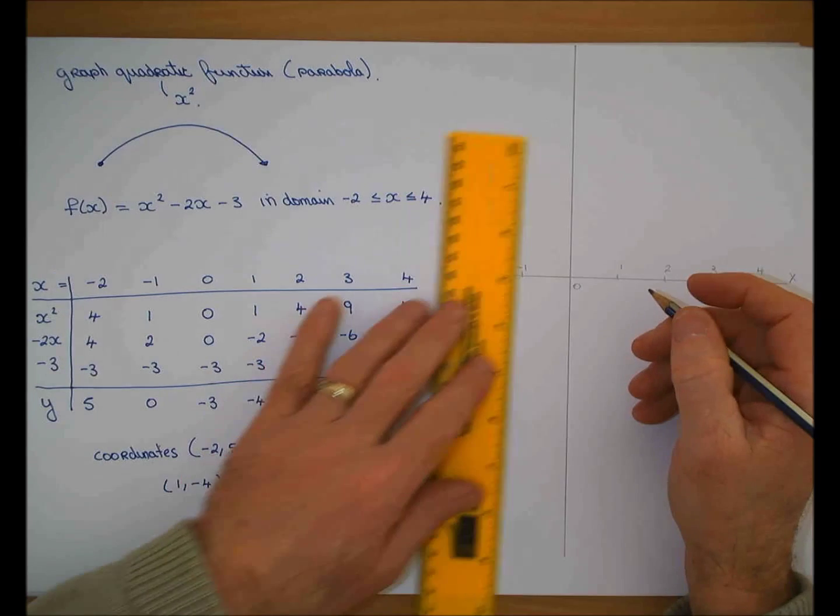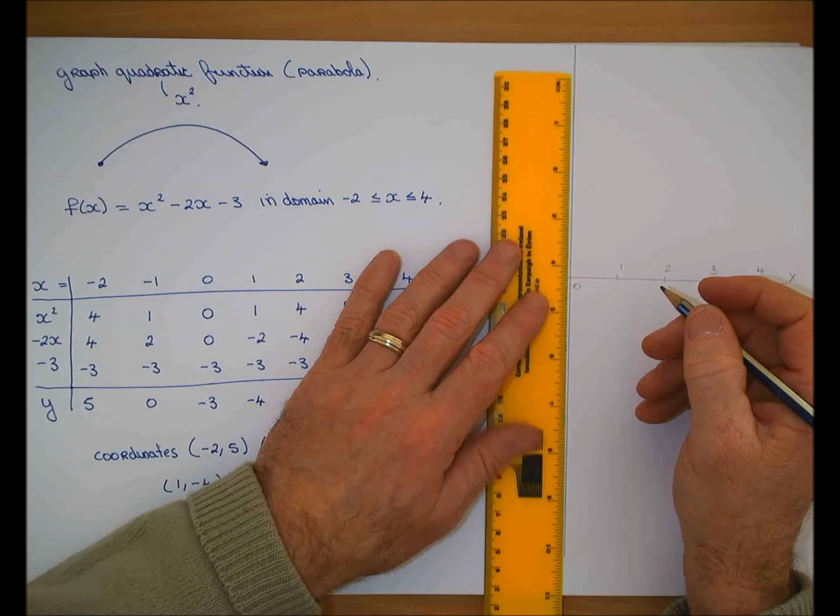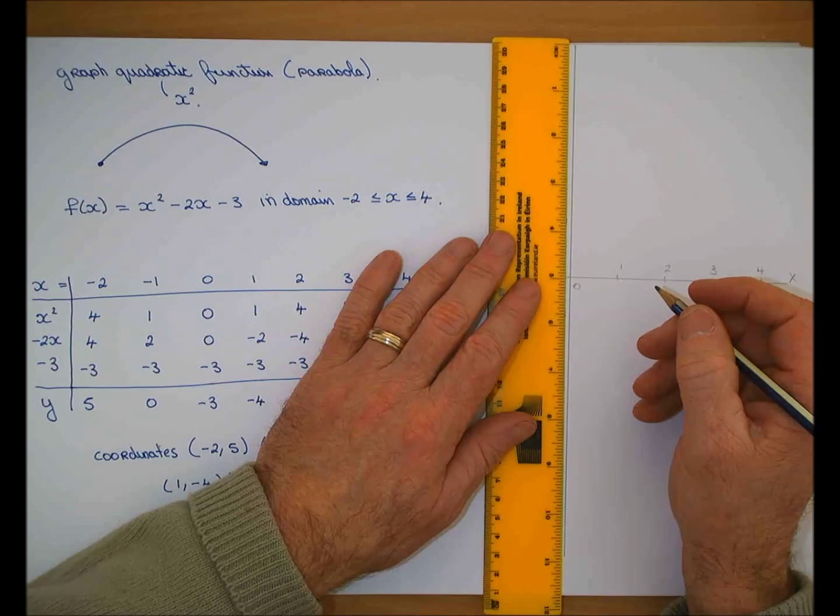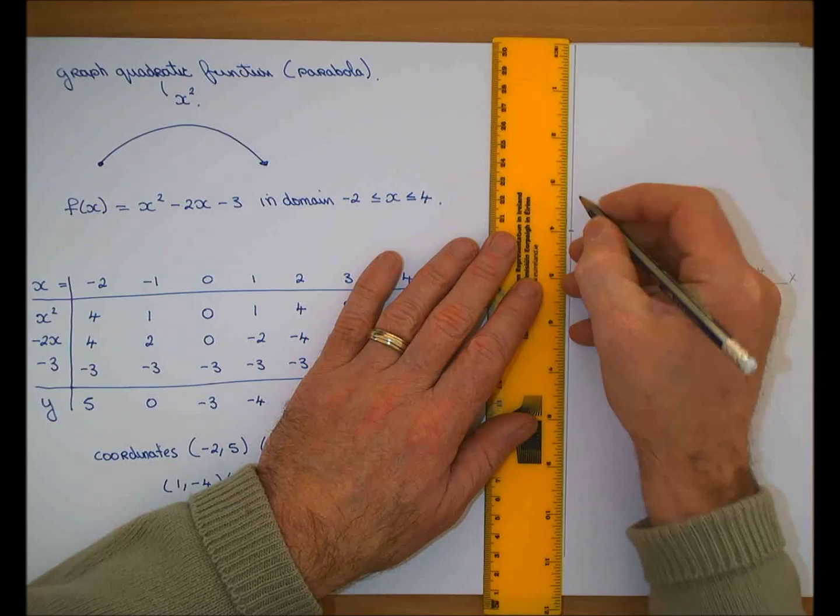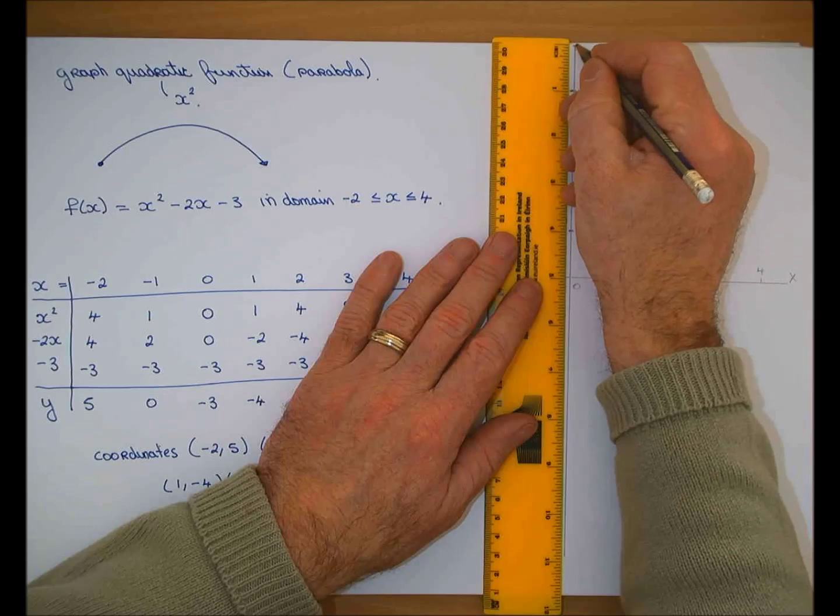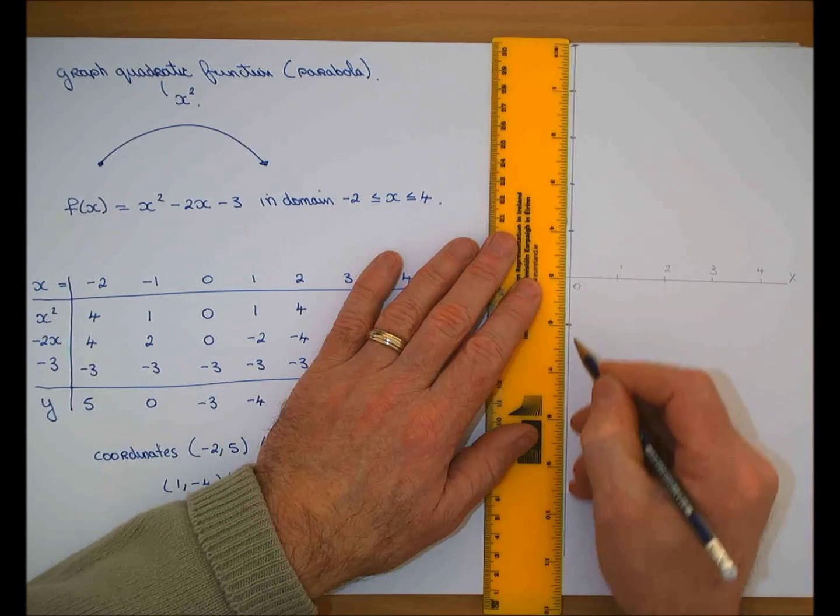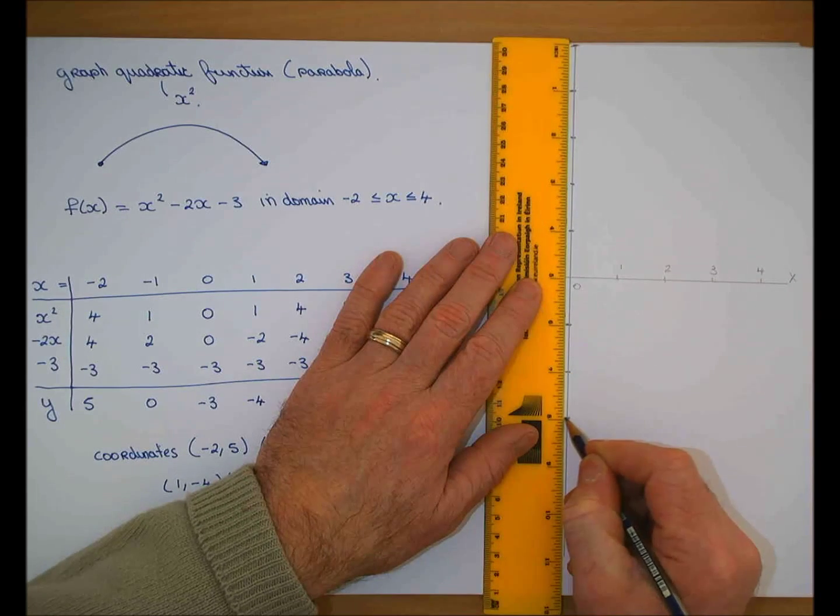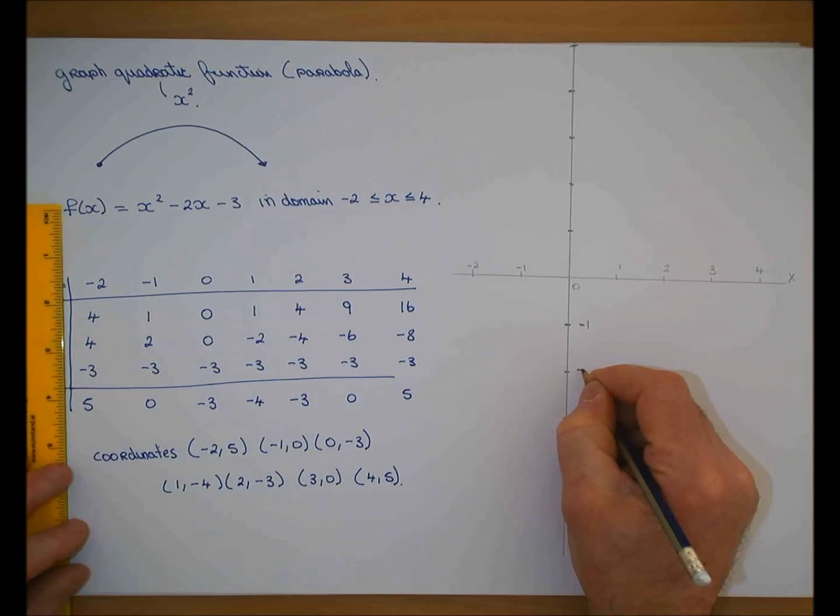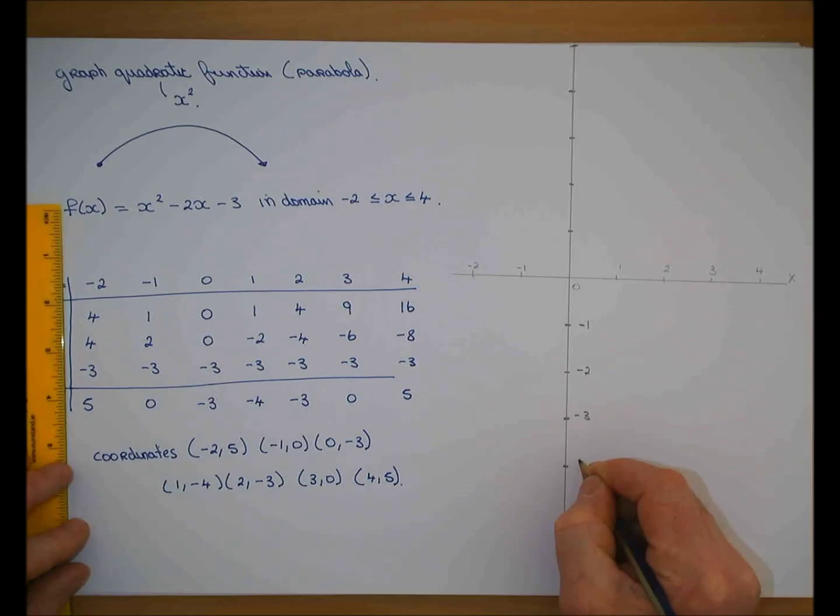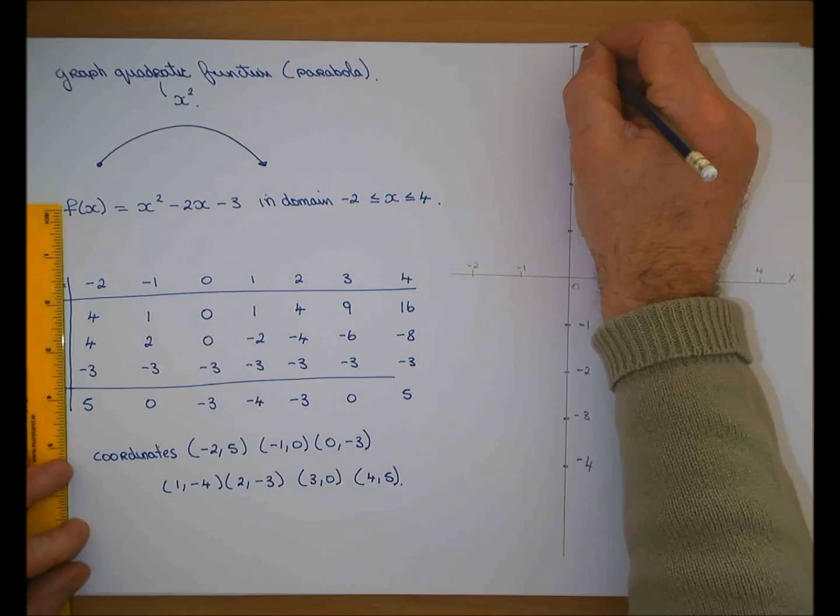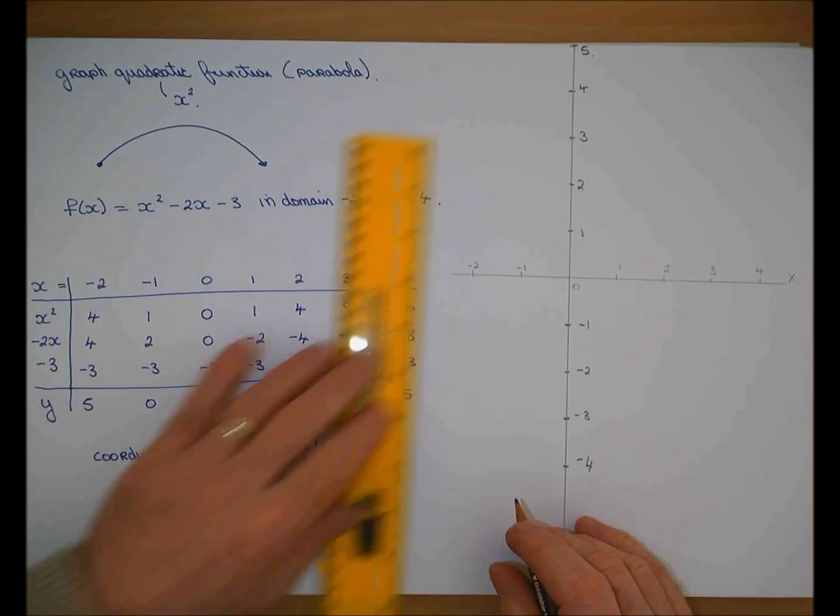On this axis I have to go up to 5 and down to minus 4. I'll make it 1, 2, 3, 4, 5, minus 1, minus 2, minus 3, minus 4. So my points...